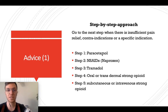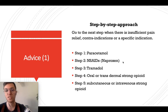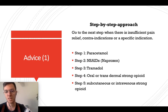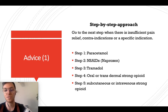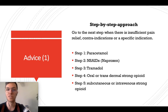Step one is paracetamol, which has good effectiveness, is cheap, safe, and has few side effects. If insufficient, step two is NSAIDs like ibuprofen or naproxen, which can be combined with paracetamol. Step three is low opioids like tramadol or oxycodone, combinable with NSAIDs and paracetamol. Step four is oral or transdermal strong opioids like fentanyl or morphine, and the last step is subcutaneous or intravenous strong opioids — mostly morphine — used only in hospital settings.